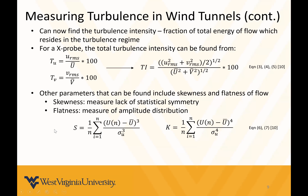Turbulence intensity is a fraction of the total energy of the flow which resides in the turbulence regime. For cross probes, the total turbulence intensity is found by taking the root mean squared velocity divided by the average velocity times 100, for both the U and V directions, then squaring, summing, averaging, and taking the square root. Other parameters include the skewness and flatness (kurtosis) of the flow — skewness measures the lack of symmetry in the flow, and flatness measures the amplitude distribution.